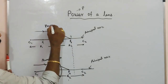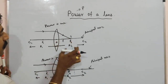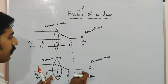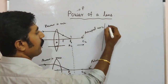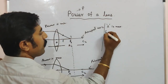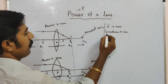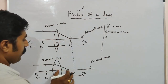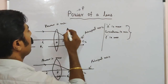Where power is minimum, the radius of curvature is maximum, which means curvature is minimum. Then the focal length is maximum. Focal length is denoted by the small letter f. When focal length f is maximum, power is minimum.